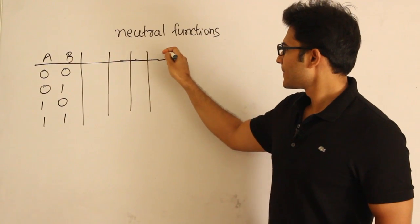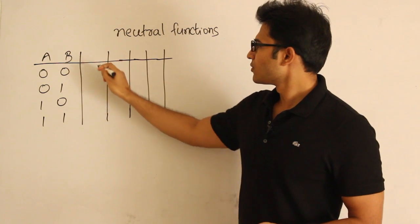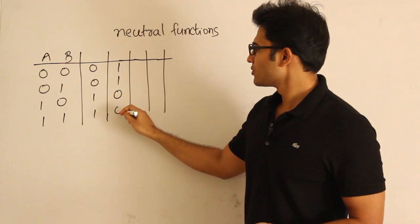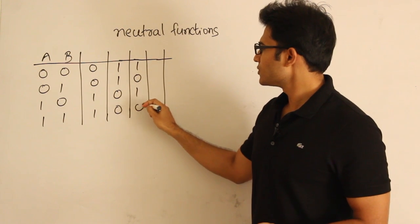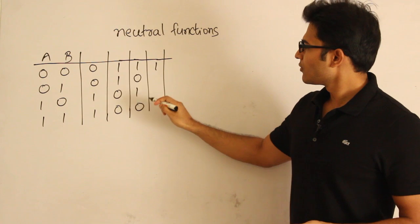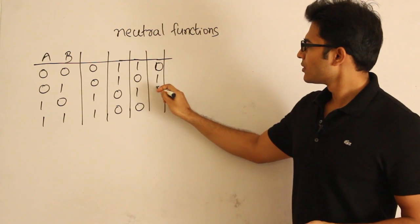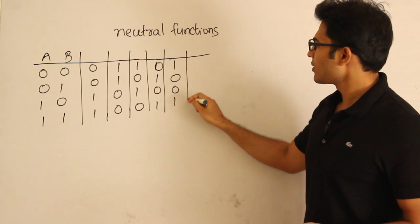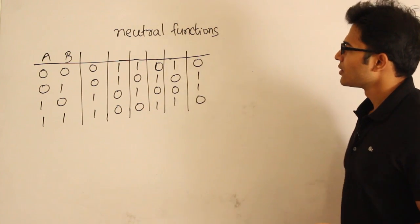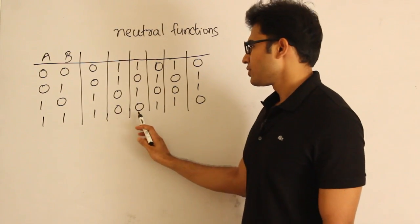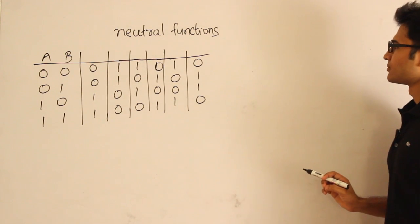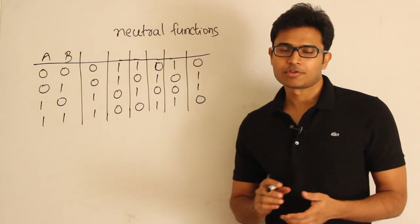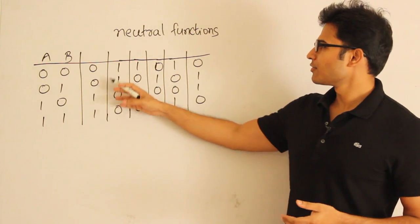For example, with two variables A and B, the input combinations are 00, 01, 10, 11. The neutral functions are those output columns that have exactly two ones and two zeros. Enumerating all such assignments: 0011, 0101, 0110, 1001, 1010, 1100. That gives us 6 neutral functions in total.